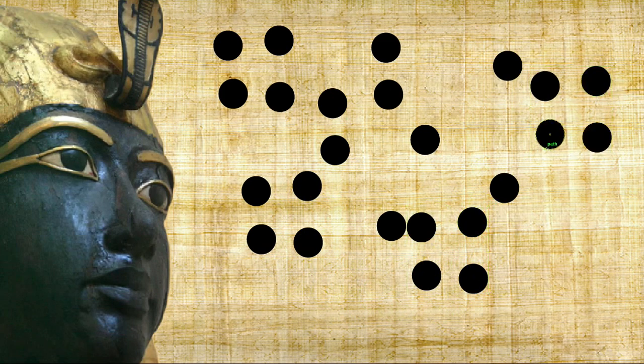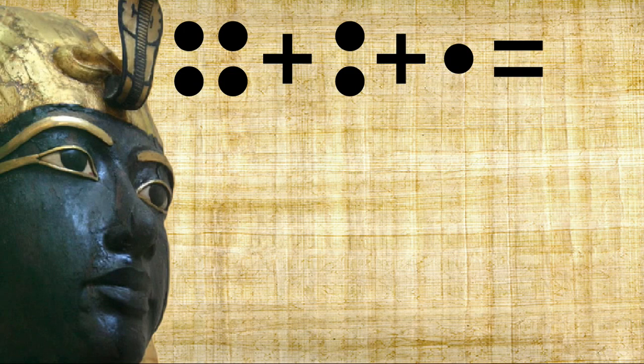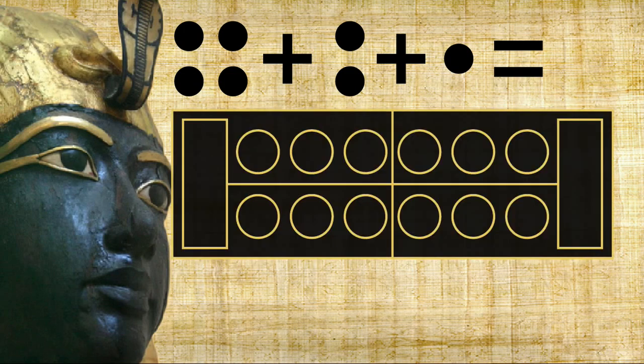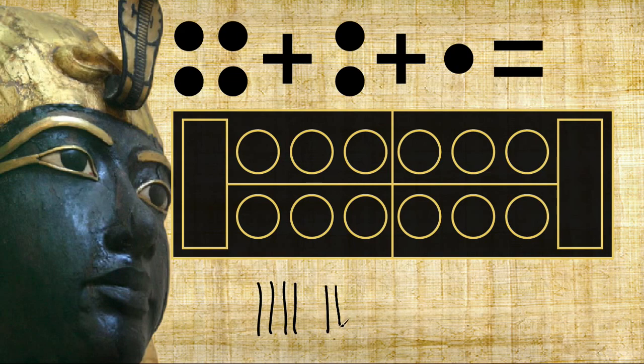So what ancient Africans decided to do was to take these groups and assign them symbols. Symbols that would make the group easier to recognize and to process and calculate. So in Medu Netter, the way they would identify ones would be simply by writing sticks. So this is a group of 4. It's easy to recognize. And this is a group of 2. And this is 1.